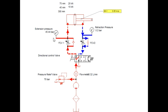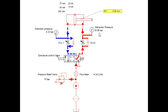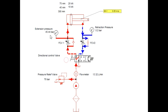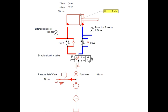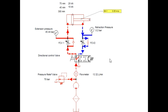After actuating the first position, the cylinder starts to extend. At that time, observe the pressure build. The flow rate at the time of extension matches our calculations. The pressure at the time of extension and retraction is the same as what we calculated. Also observe the pressure build at the time of retraction and the corresponding flow rate.